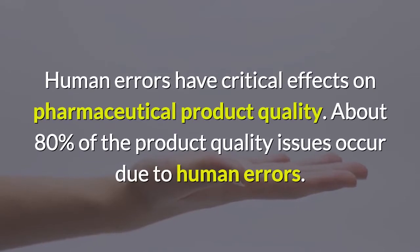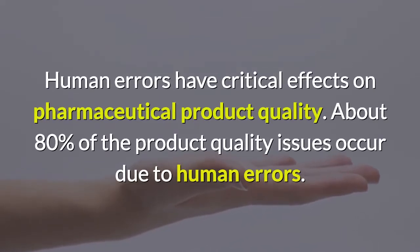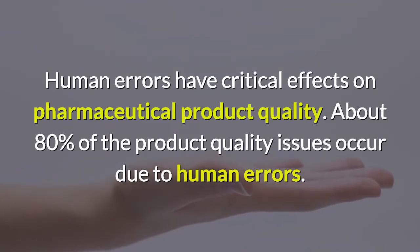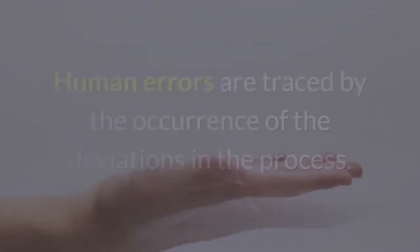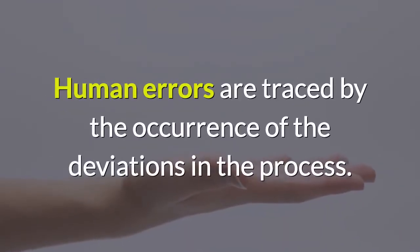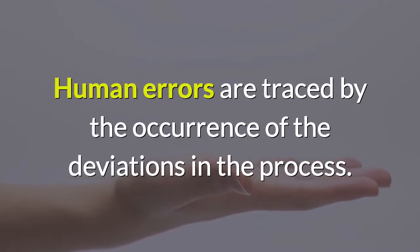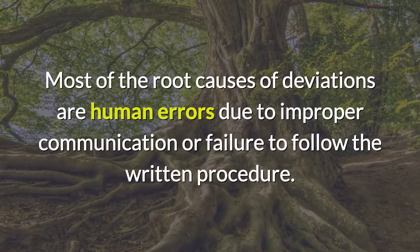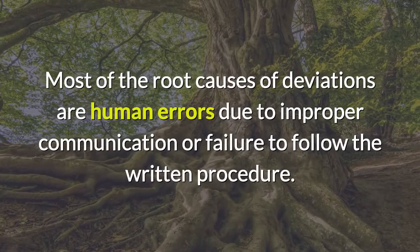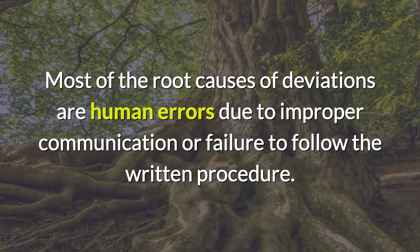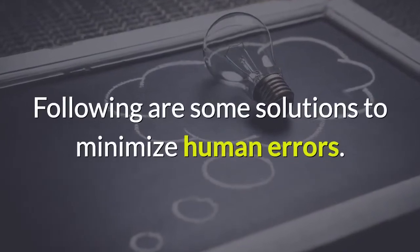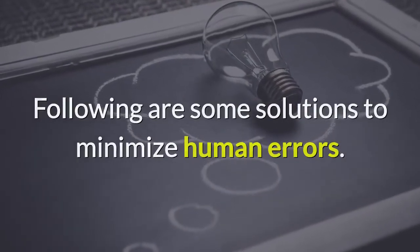Top 6 Ways to Reduce Human Errors. Human errors have critical effects on pharmaceutical product quality. About 80% of the product quality issues occur due to human errors. Human errors are traced by the occurrence of deviations in the process. Most of the root causes of deviations are human errors due to improper communication or failure to follow the written procedure. Following are some solutions to minimize human errors.